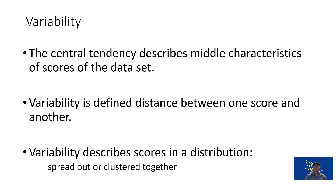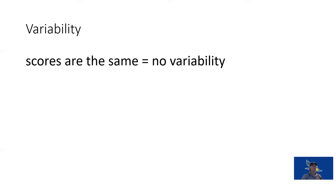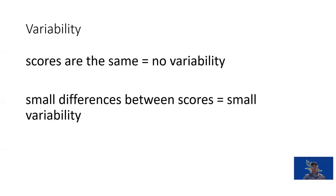That's what variability gives us — the spread of scores, or how scores are laid out compared to each other, how spread out or clustered they are. If all the scores are the same, say everybody gets 10 out of 10, there is no variability because all of the scores are identical.